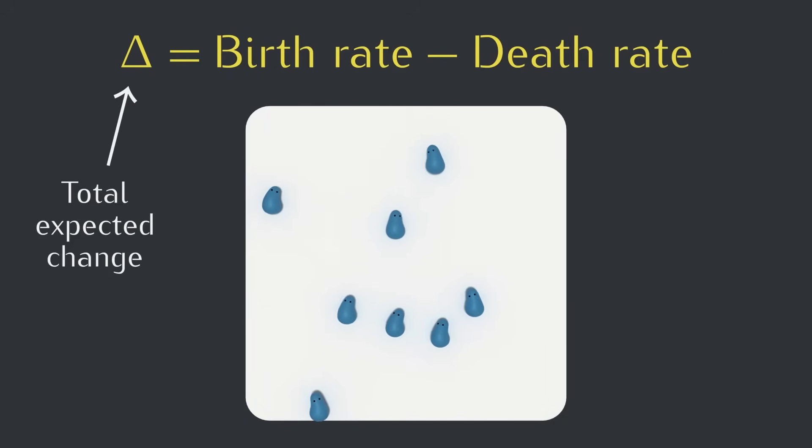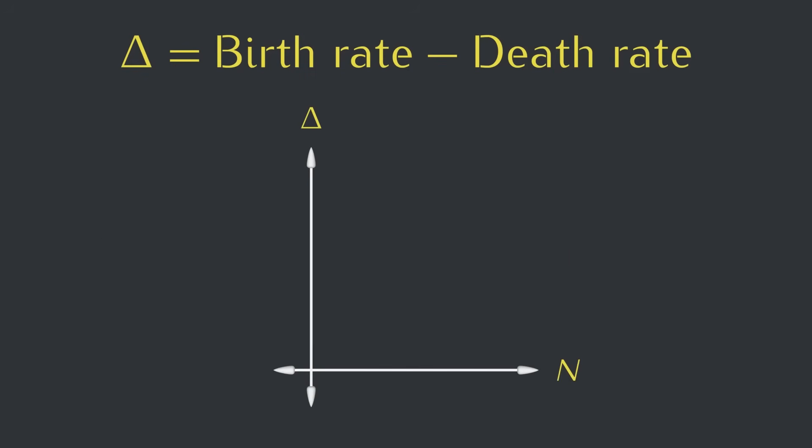Which is good because, as you can see, the number of creatures does change pretty constantly. And our equation is starting to look like a function equation. The last step is to write the birth and death rates in terms of the total number of creatures, and then we'll be able to draw the graph.